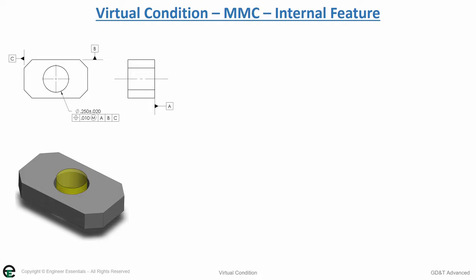The virtual condition for an internal feature at MMC is the inner boundary. We're trying to calculate what is the smallest area this hole can never cross to make sure that when we assemble a part through it that we know what our limit is.